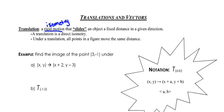A translation is not only an isometry, but also a special kind called a direct isometry. A direct isometry preserves not only length but orientation as well. Under a translation, it's important to notice that all points in a particular figure are going to move exactly the same distance. This will be useful in coming lessons when we try to describe what transformation a particular object has undergone.